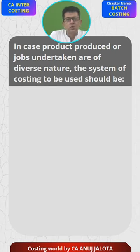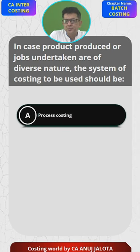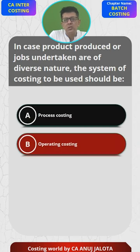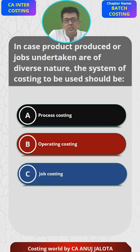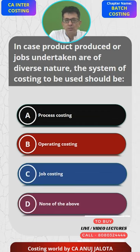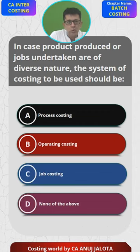In case products or jobs undertaken are of diverse nature, the system of costing that should be used should be: A) process costing, B) operating costing, C) job costing, or D) none of the above. Now, in case you are going to be producing units where each of them is different, we say one unit will be nothing but one job.